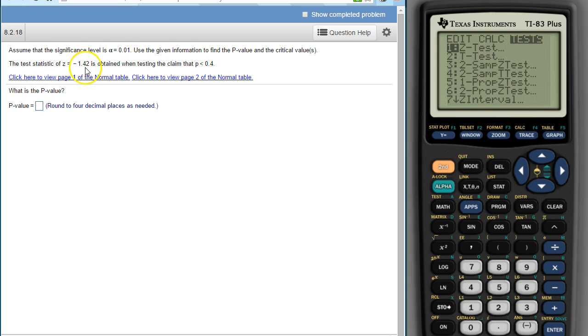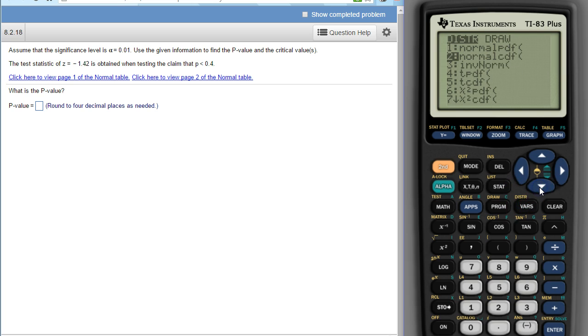So the p-value is anything that's as extreme or more extreme than this. The p-value is found with normal CDF because we're using z. Remember z is the test statistic and the critical values in the standard normal. So we're going to use normal CDF and the p-value is anything as extreme or more extreme than this.